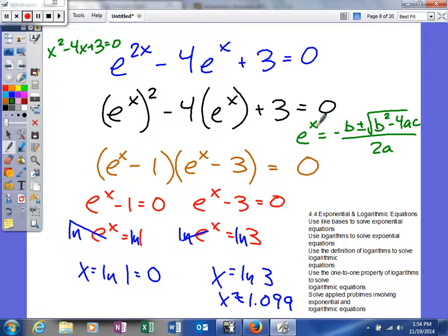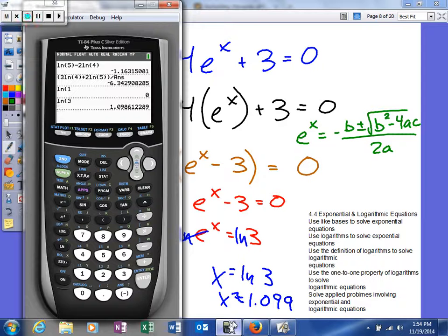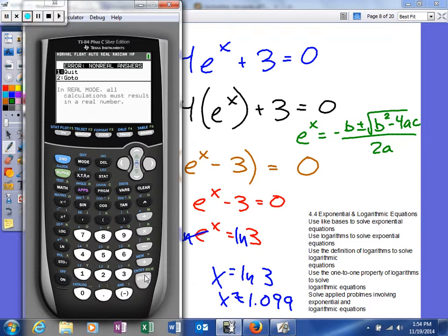The only other thing that you need to know is sometimes if we were to get a negative number for either of these, we could not actually get the answer. Because if you were to type in, say, if this were instead of the natural log of 3, if you do the natural log of negative 3, it's going to say non-real answer.